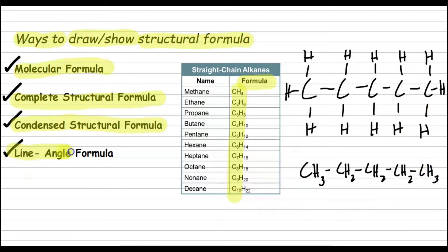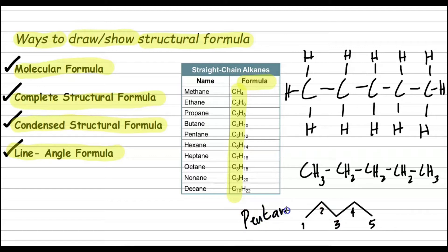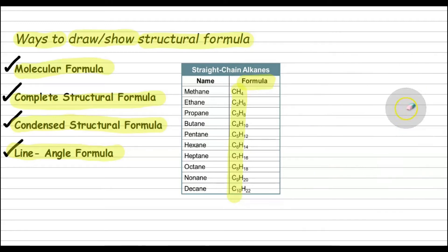How about the line-angle formula? In line-angle formula, we draw diagonal lines and connect them together. Carbon atoms are located at each intersection and at the ends of the lines. So for pentane, this is the line-angle formula. And for hexane, this would be the line-angle formula.